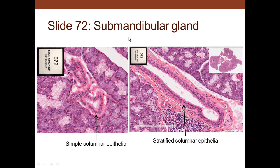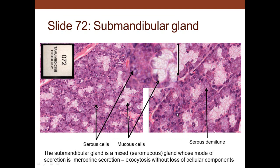The submandibular gland, one of the salivary glands, shows simple columnar epithelium as part of its duct, and as the duct gets more complex, it becomes stratified columnar — more than one layer with columnar cells on the surface. Looking at the glandular portion, you can see both a serous and a mucus component. Sometimes serous and mucus are found together, where the serous is on the outside of the mucus component — this is called a serous demilune. This gland is a mixed serous-mucus gland.